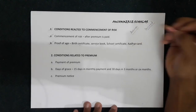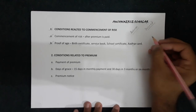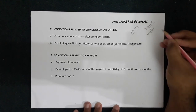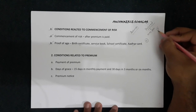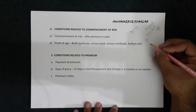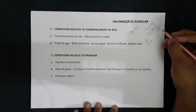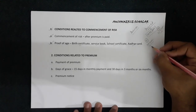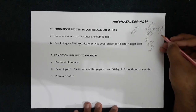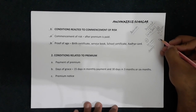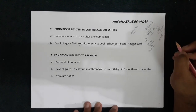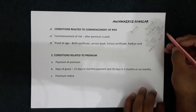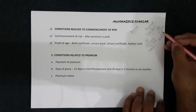Suppose the insured wants to take a policy of 10 lakh rupees. Two people of different ages want to take this policy: X whose age is 30 years, and Y whose age is 35 years. X may have to pay a premium of 2000 rupees per month, but for the same policy Y will have to pay 2500 rupees per month. The reason is that X's age is less.